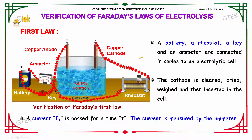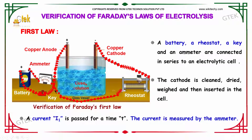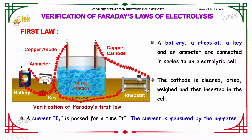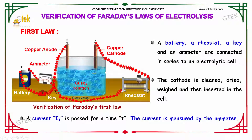Verification of the first law. We have a battery BT, a rheostat, a key, and an ammeter connected in series to an electrolytic cell.